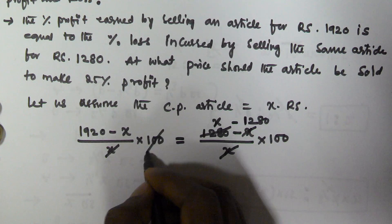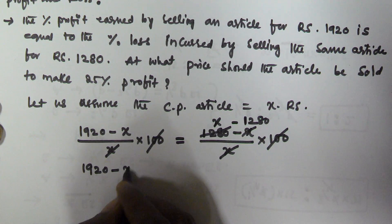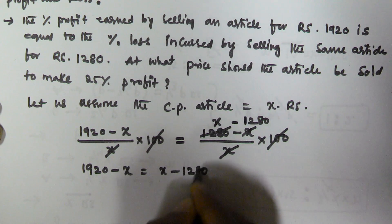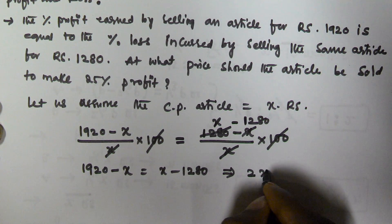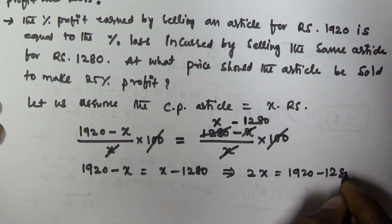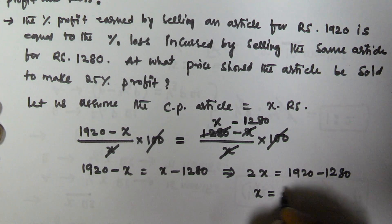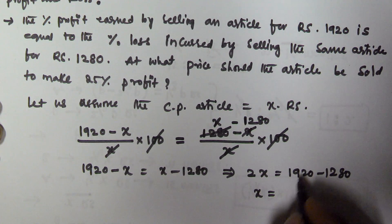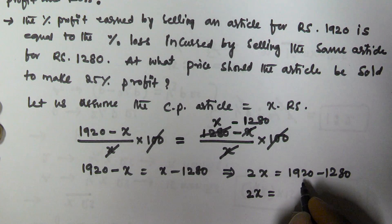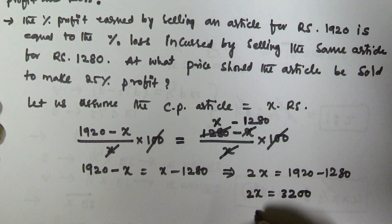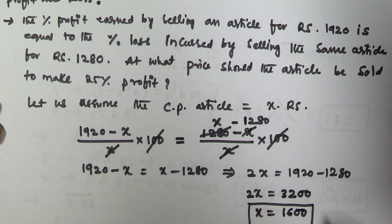After cancelling x and 100 from both sides, we get: 1920 minus x is equal to x minus 1280. So 2x is equal to 1920 plus 1280, which gives x equal to 1600. So the cost price of the article is 1600 rupees.